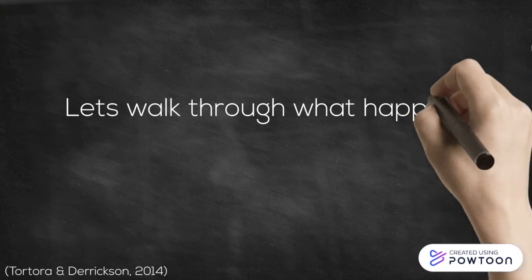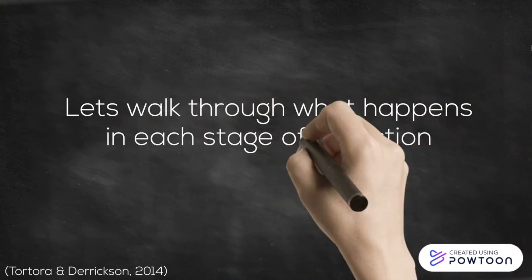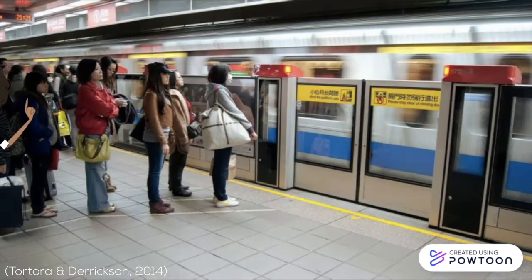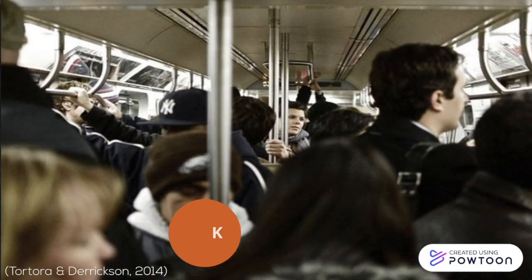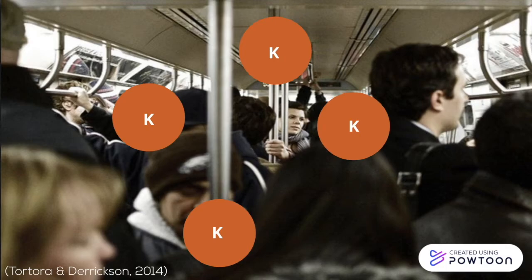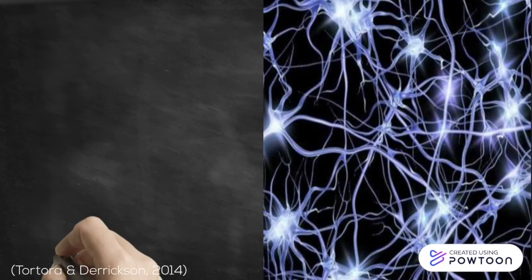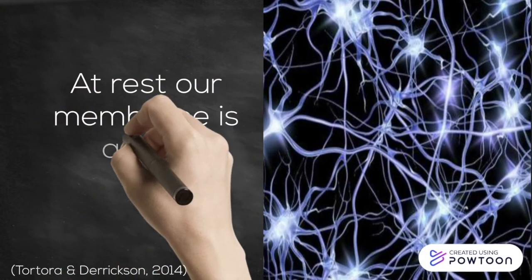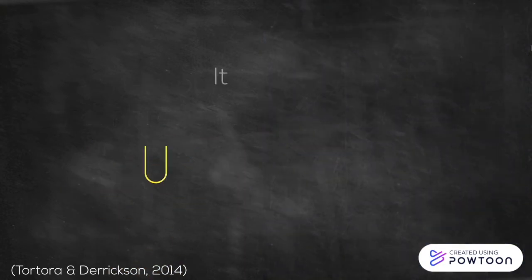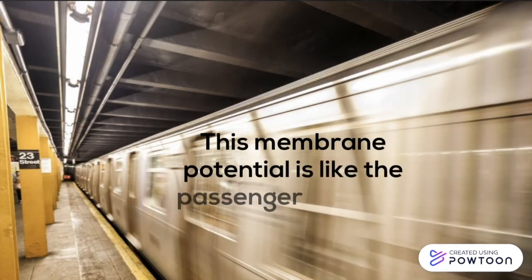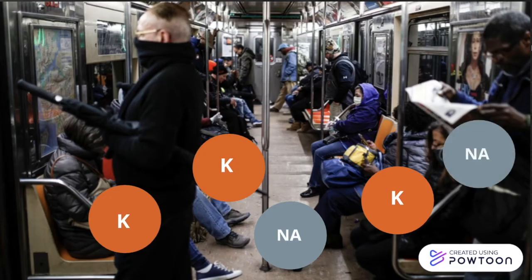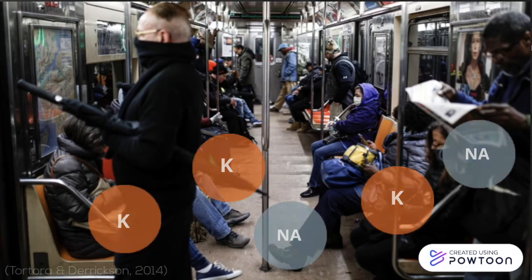Let's walk through what happens in each stage of an action potential. Pretend our membrane is like a subway system. Passengers on the outside of the train or channel are called sodium ions, and passengers on the inside are called potassium ions. At rest, our membrane is at negative 70 millivolts. It must reach a certain threshold to get the action potential started, or the train moving. The membrane potential is like the passenger capacity of the train. At rest, there is a certain number of passengers, but it is not enough to start the train.